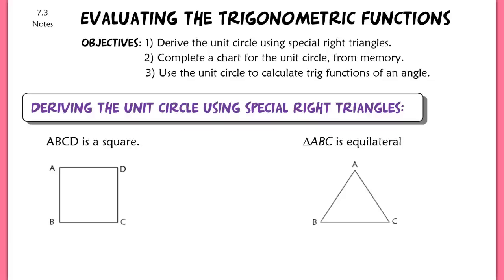This lesson is for section 7.3. We're going to be evaluating all six trig functions using more inputs than what we looked at in the last lesson. We have three different objectives for the day. Our first objective is to be able to derive the unit circle using special right triangles. By understanding where that unit circle comes from, you'll be able to very quickly, from memory, construct a unit circle. Then we're going to use the unit circle to calculate the trig functions for an angle input — done without a calculator.